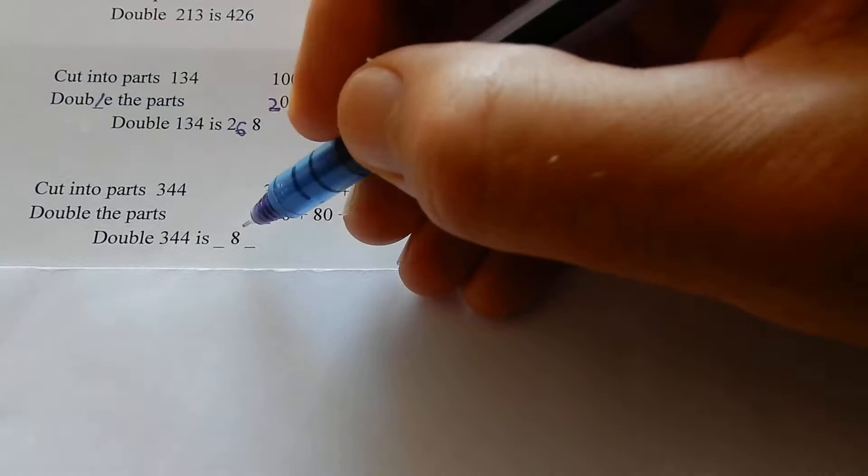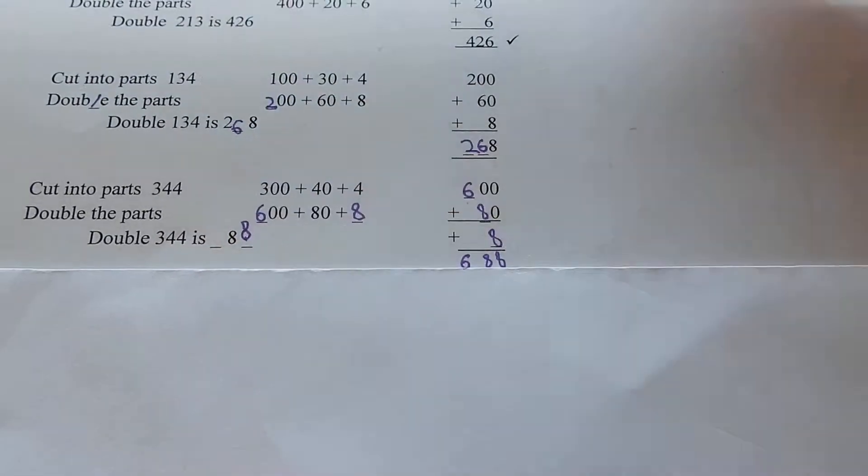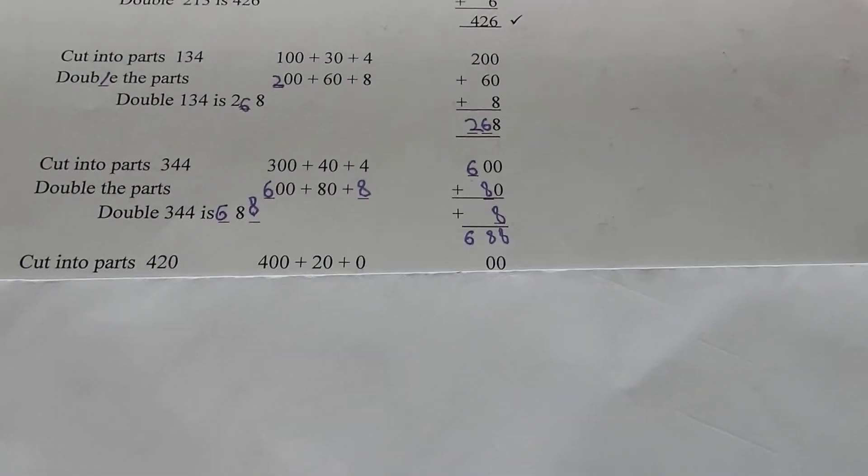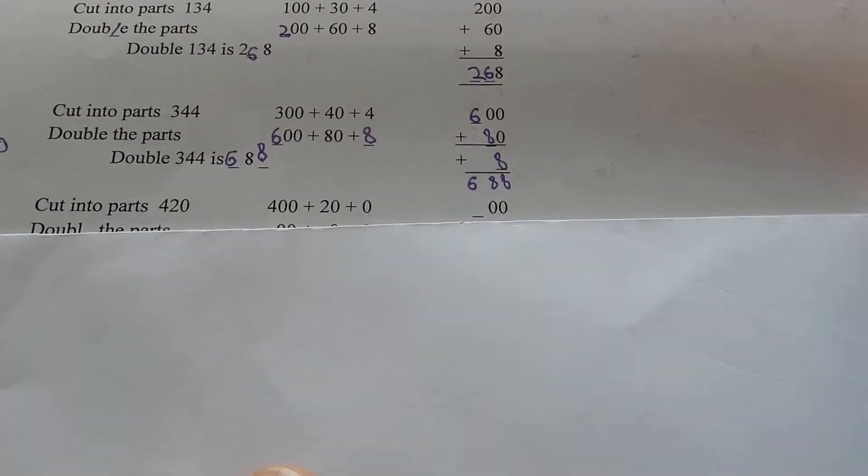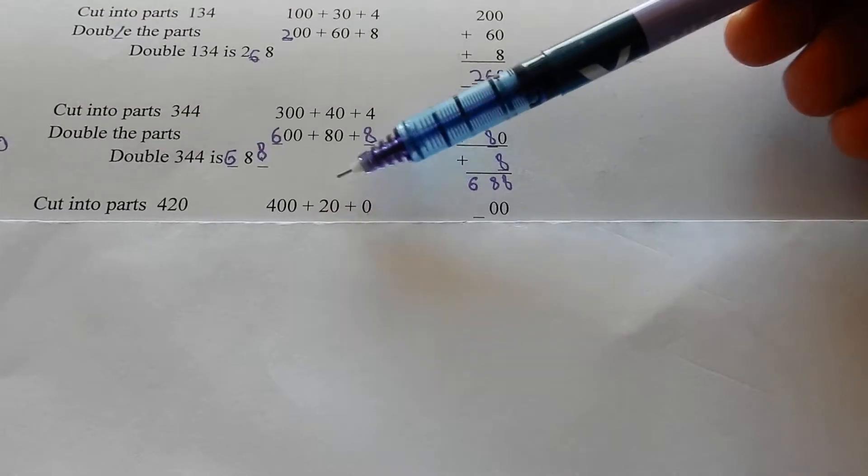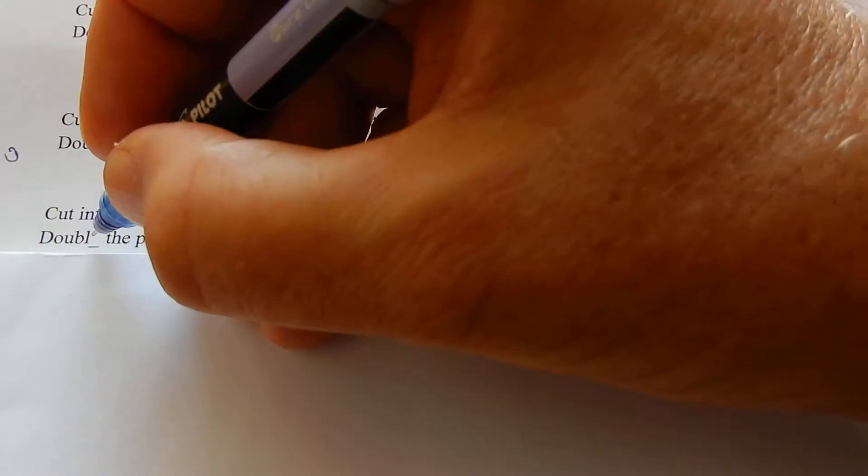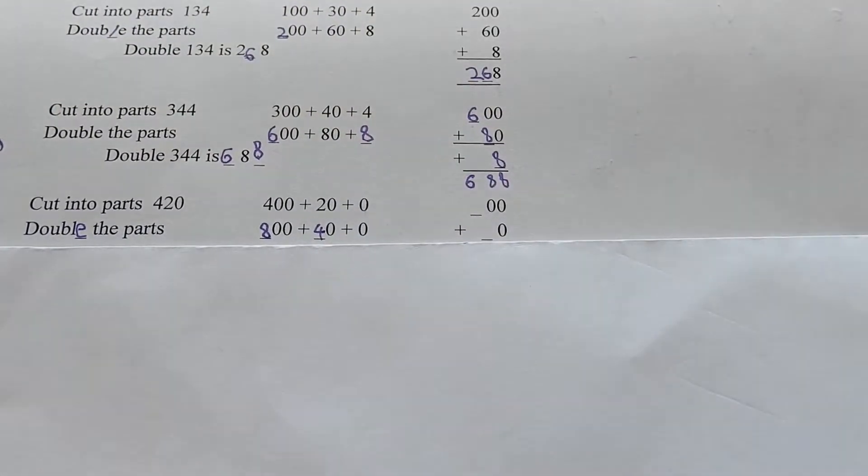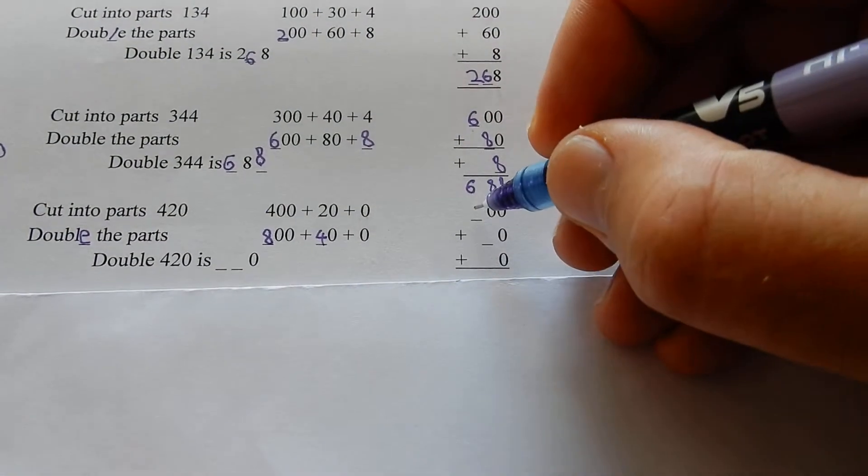688. That means changing double 334 because these numbers are all smaller than five, it's easy. Double 4 is 8, double 40 is 80, double 300 is 600. Double 420: cut it into parts. The cutting into parts is very important when you get numbers over 5. 420 is 400 plus 20 plus 0. Double 400 is 800, double 20 is 40, double 0 is 0.